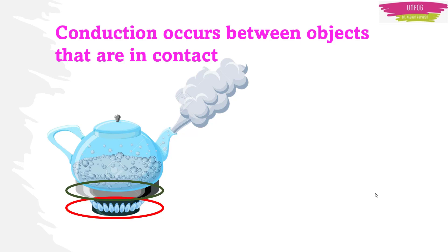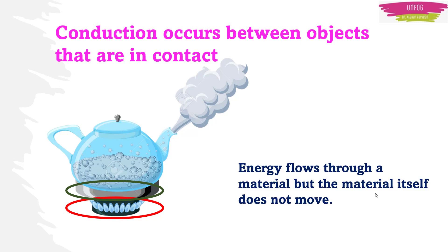The atoms that are vibrating in the object at higher temperature collide with atoms in the object at lower temperature, resulting in a net transfer of energy to the colder object. In conduction, energy flows through a material, but the material itself does not move.